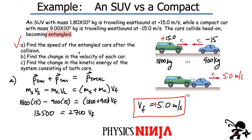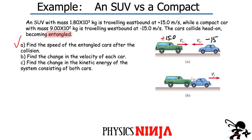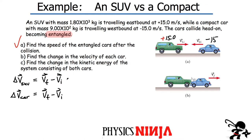Now let's find the change of velocity of each car. The definition of change of velocity is delta V = v_final minus v_initial, and velocity is a vector so we need to be careful. For the SUV: delta V = 5 minus 15 = negative 10 meters per second. That's the change of velocity — the SUV slowed down by 10 m/s.